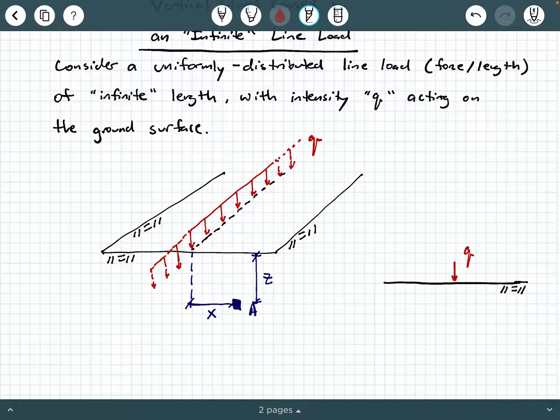So this is kind of like if we put an eyeball over here and we're looking at the line load from this direction, so Q in this 2D representation is coming in and out of the screen at you and point A is over here. And so this horizontal distance X is here and the vertical distance is Z and that's below the ground surface.